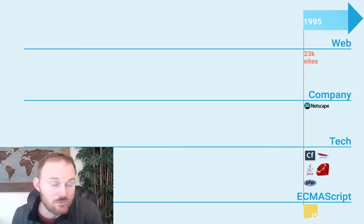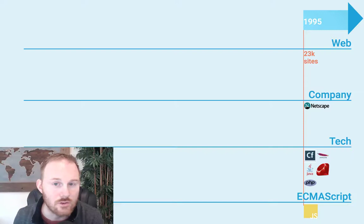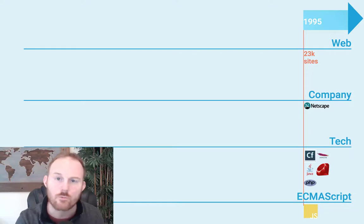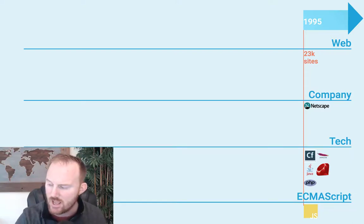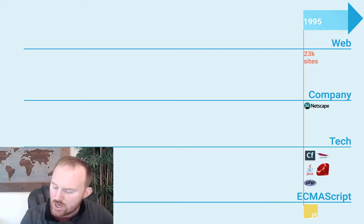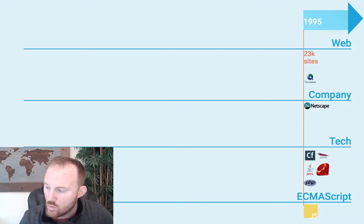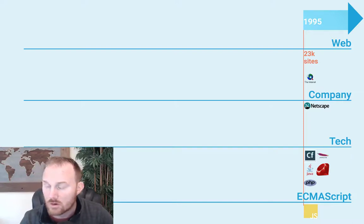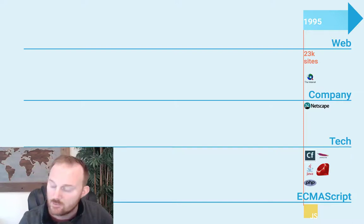JavaScript gets its name because Sun allowed them to use Java in the title. It's going to be confusing to the average person — people still confuse it all the time. It also makes sense because they're connected: Java is supposed to run in Netscape doing the server-side stuff, and JavaScript runs on the client side. Later that year in December, Internet Explorer comes out — that is Microsoft's big appearance. Netscape has just barely stayed ahead of the game.